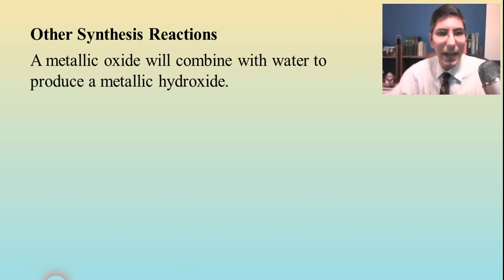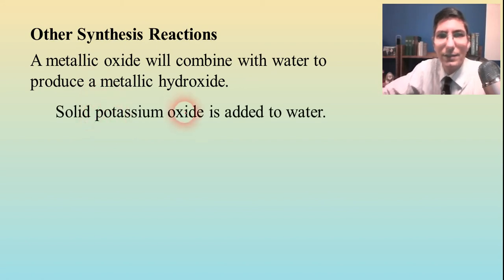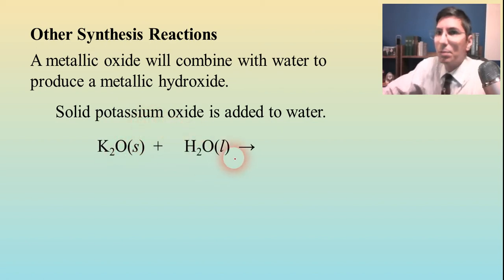A metallic oxide combines with water to produce a metallic hydroxide. A metallic oxide is just a compound that's a metal combined with oxygen, like sodium oxide or zinc oxide. In this example, solid potassium oxide is added to water. You write the formula there: potassium oxide is K2O, and we're adding it to water. What's the product? A metallic hydroxide, so it's going to be KOH.